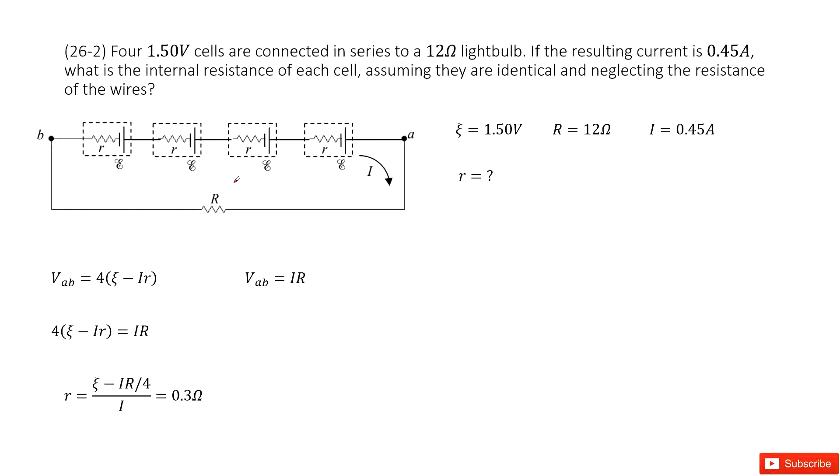Ask you, what is the internal resistance for each one? So how can we do that? We first plot the graph. We can see we have four cells connected in series, right?